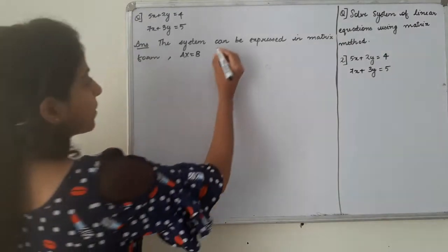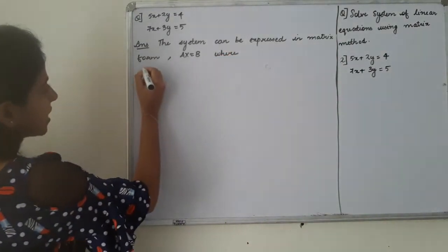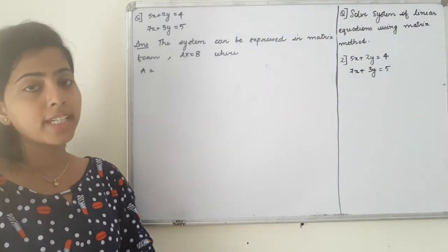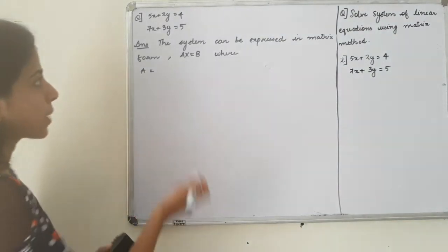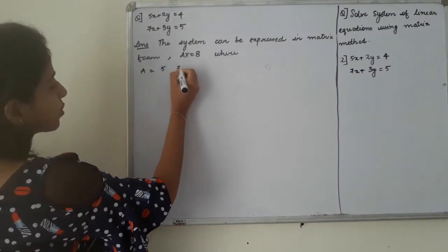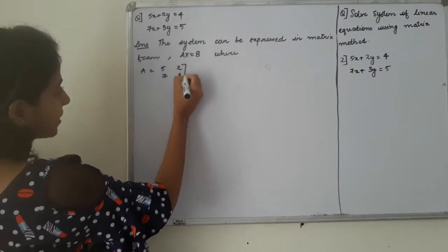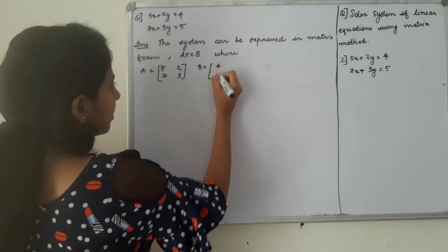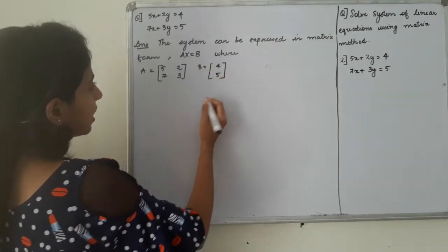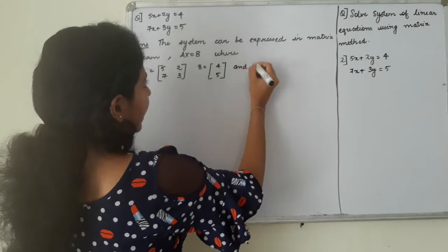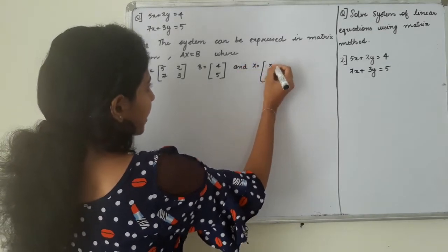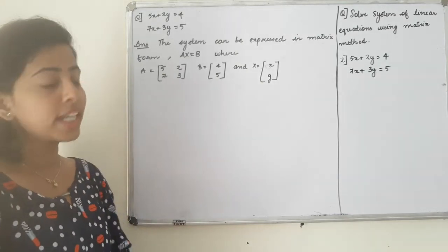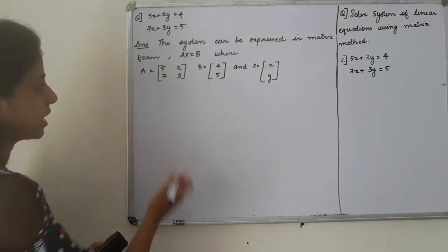Where A is equal to, we have a matrix. There are 2 variables. The answer is 5, 2, 7, 3. What about B?